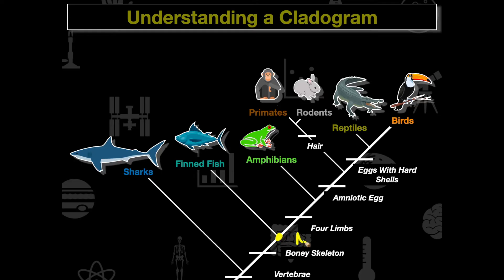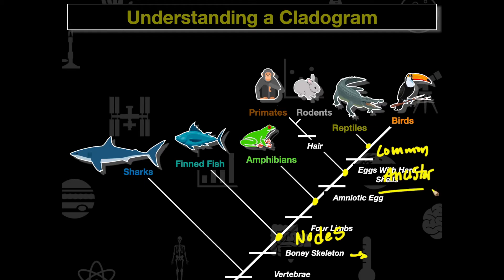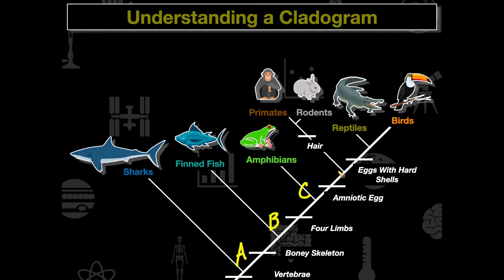As we're going through and looking at this, we have to remember our nodes. Nodes are going to indicate where the common ancestor is — the point that allowed for the rise of these two or more organisms on the cladogram. This indicates a mutation that occurred, allowing a certain phenotype to arise. These nodes along our cladogram represent our common ancestor.